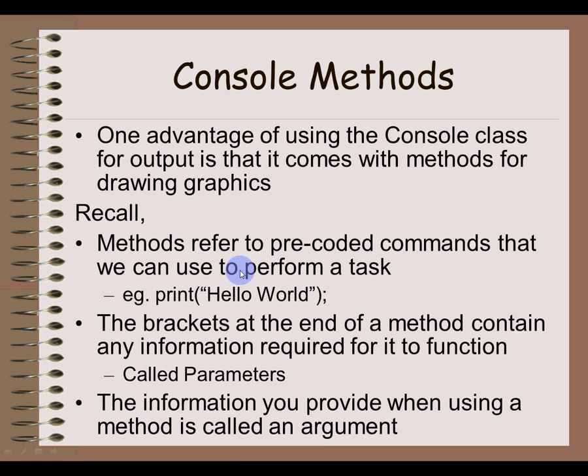The information provided within these smooth brackets are called parameters. So a print method requires something for us to print. In your program, when you actually provide that information, that's called an argument. So you provide an argument for a parameter of a method.